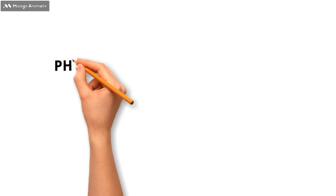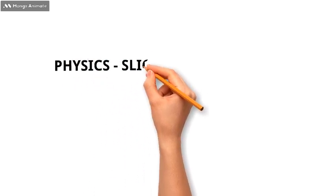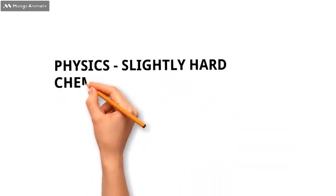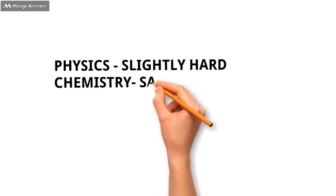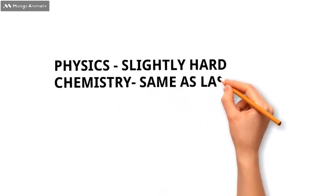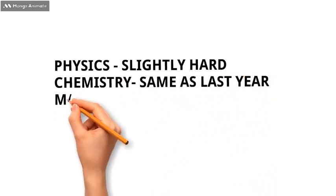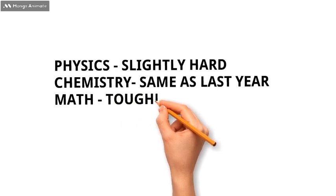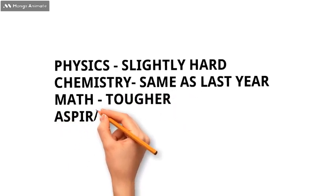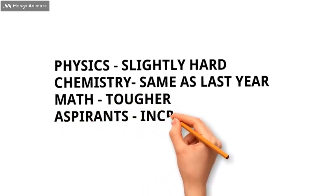Now let's have a look at this year's paper level. For physics, the difficulty level has slightly increased. For chemistry, the level was same as the previous year. And talking about the math section, the question level has significantly increased. With respect to last year, this year the number of aspirants has also increased.